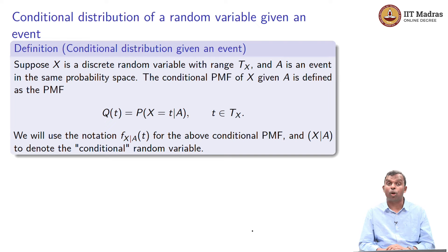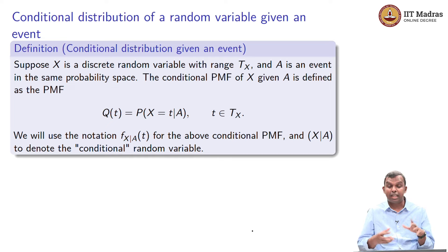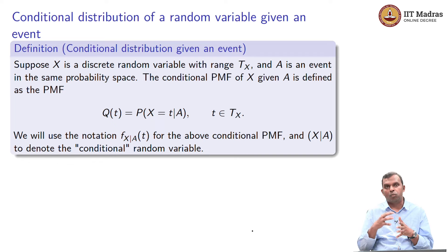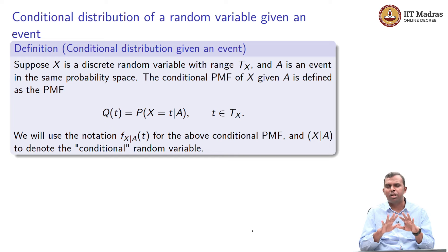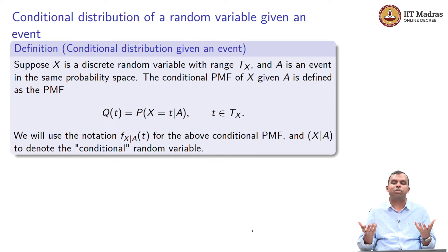One can define something called the conditional PMF of X given A. This is a PMF which you can denote Q of T — basically it is the probability that X equals T given A. Previously the PMF of X without any conditioning is simply the probability that X equals T. Now, if there is an event A on which you want to condition, then probability that X equals T given A becomes a conditional PMF, conditioned on an occurrence of an event.